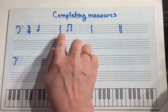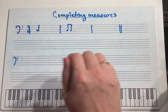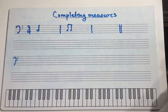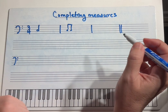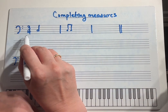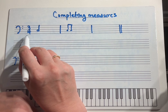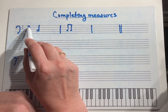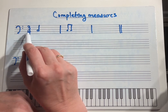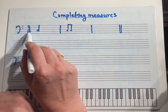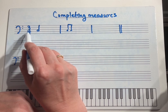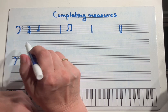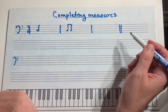Each measure needs something for it to be completed. You're given a time signature — this is one of the first ones you learn: three beats in a measure and a quarter note gets one beat. So when you do this,